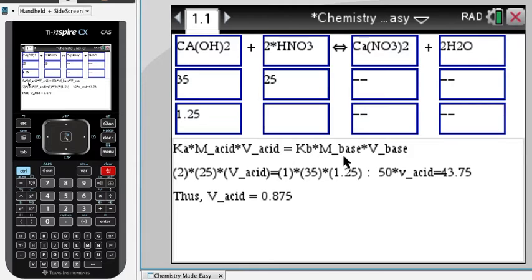MV is equal to MV. M acid V acid is equal to M base and V base. And now we also have to look at the coefficients here of acid and base.